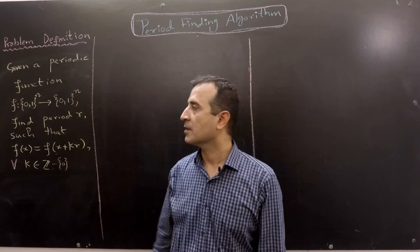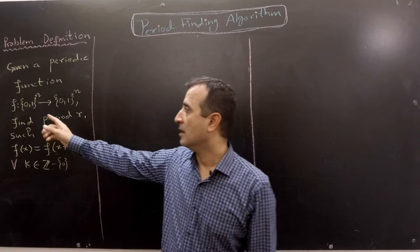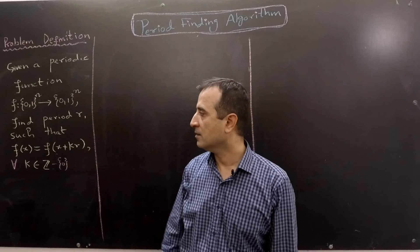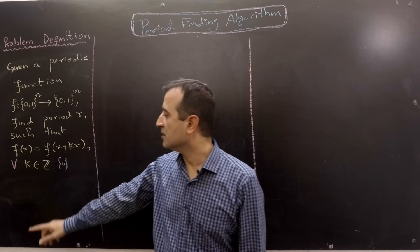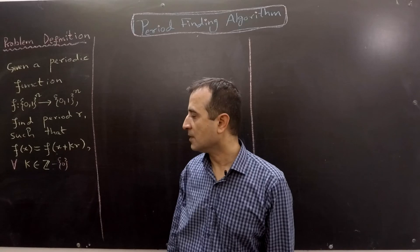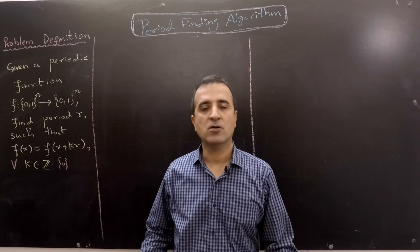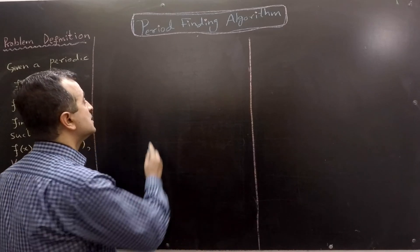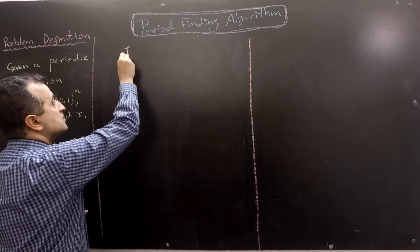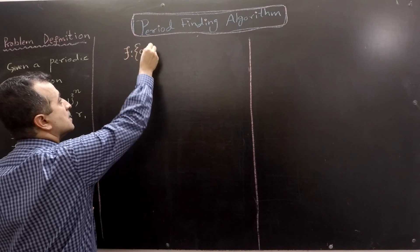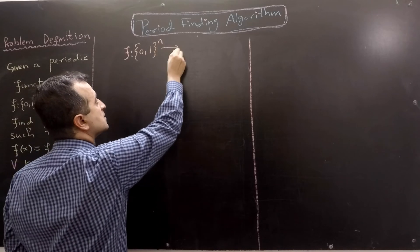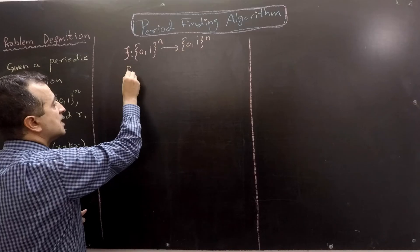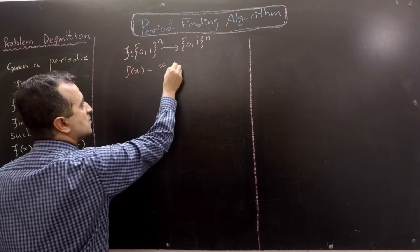Here is the problem definition. Given a periodic function which takes n bits as input and produces n bits of output, our goal is to find its period r such that f(x) = f(x + kr), where k can be any non-zero integer. To make this definition clearer, let's do an example. Our periodic function takes 4 bits as input and produces 4 bits of output, defined as f(x) = x mod 3.